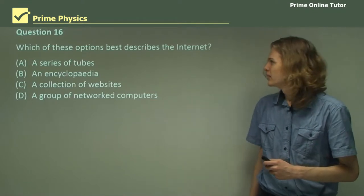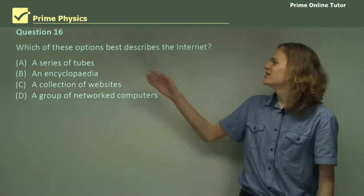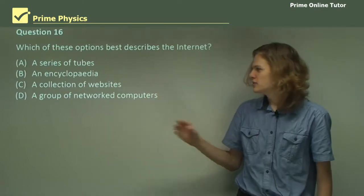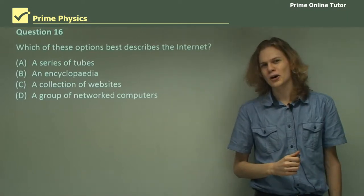Question 16. Which of these options best describes the internet? Is it a series of tubes, an encyclopedia, a collection of websites, or a group of networked computers? Well, let's go through our options, shall we?